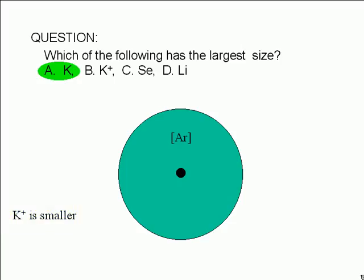In general, positive ions formed from atoms are smaller than the original atom.